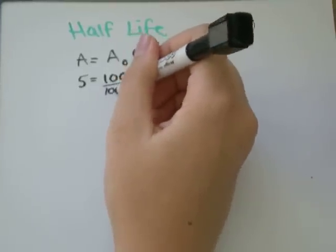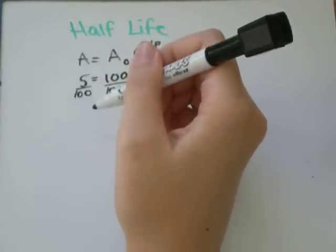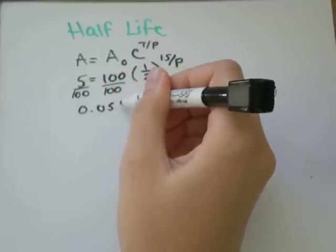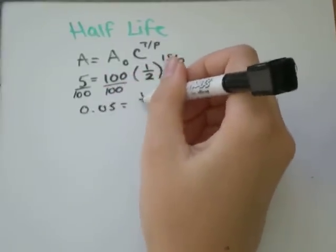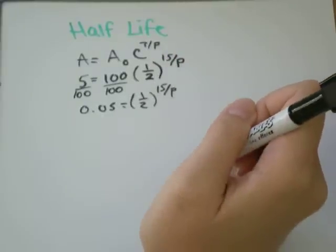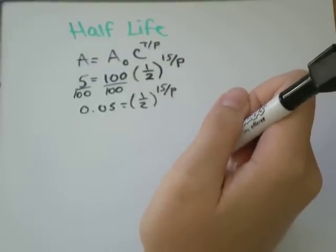First thing, divide by 100 and you'll get 5 divided by 100. 0.05 equals 1 half to the exponent of 15, the time in years, over p, how long it takes to do its half-life.